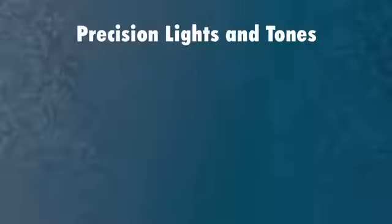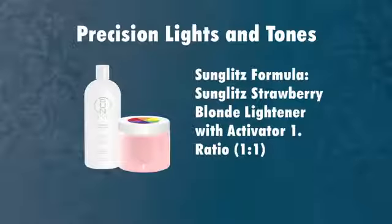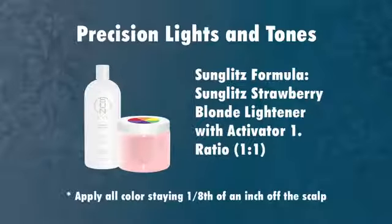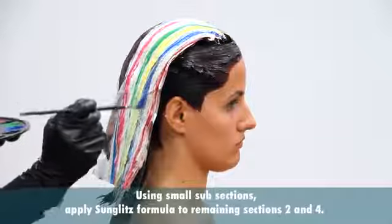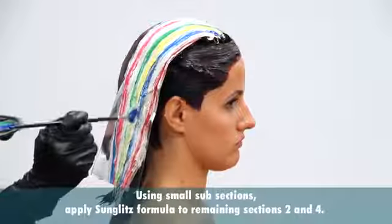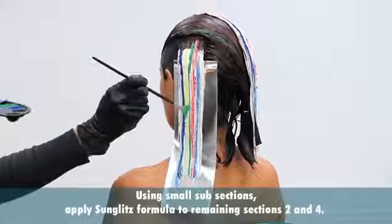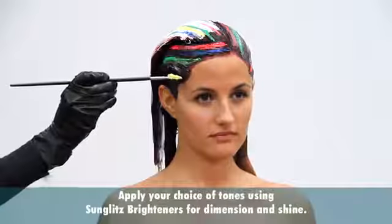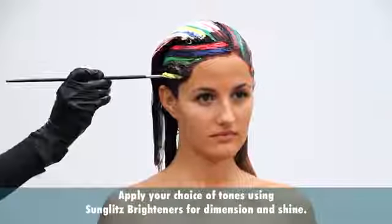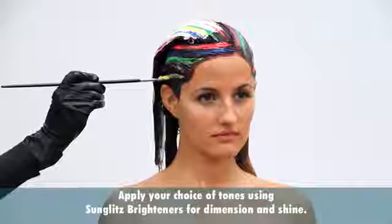Precision lights and tones. Sunglitz formula: Sunglitz strawberry blonde lightener with activator one, ratio one to one. Apply all colors staying an eighth of an inch off the scalp, using small subsections. Apply Sunglitz formula to remaining sections two and four. Apply your choice of tones using Sunglitz brighteners for dimension and shine.